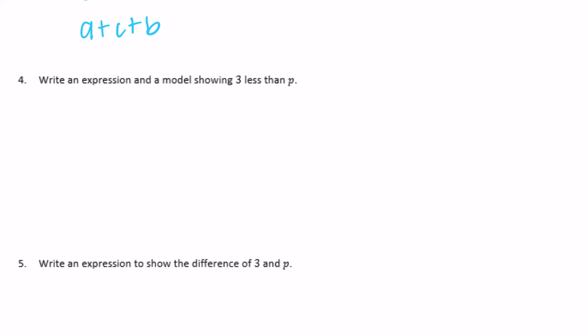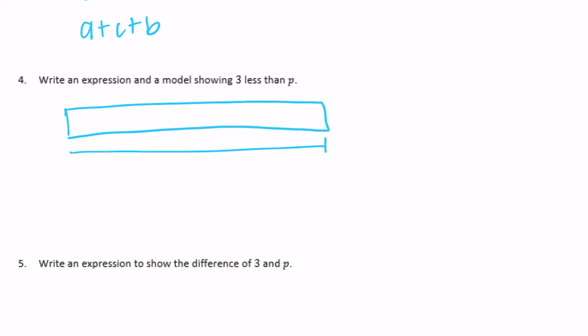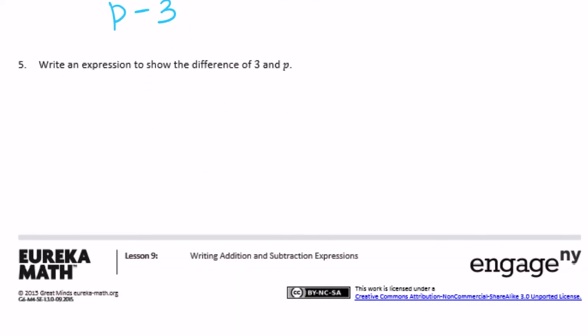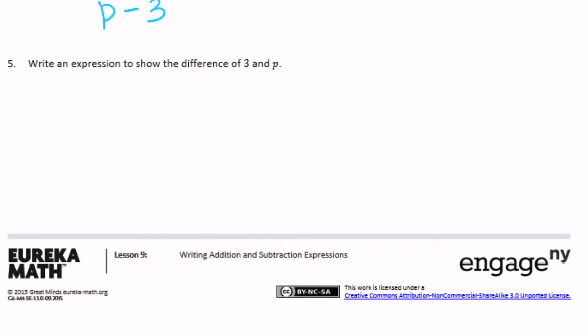Number 4: write an expression and a model showing three less than p. P is the whole, and we want three less than that, so we take away 3: p minus 3. Number 5: write an expression to show the difference of three and p. The difference of three and p means how much is between them, so that would be 3 minus p.